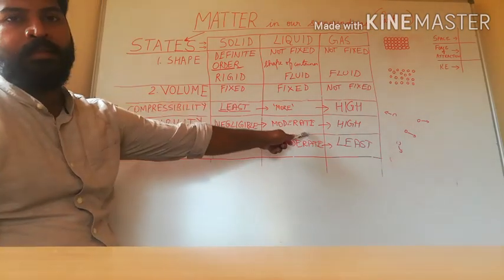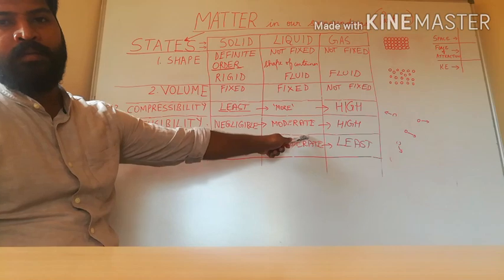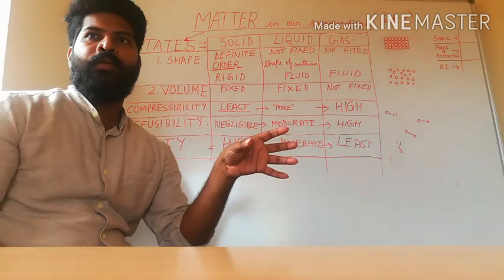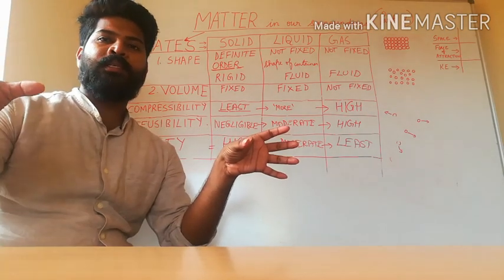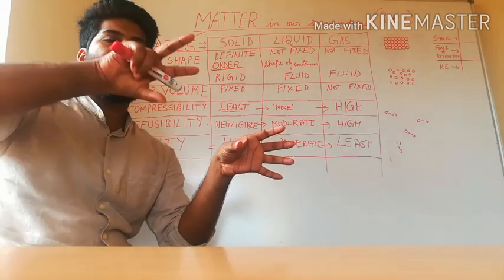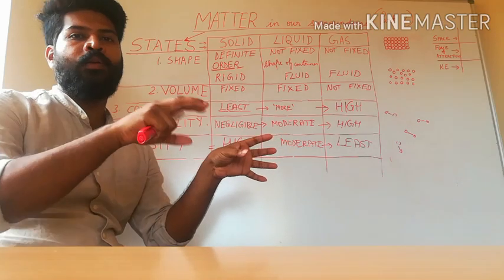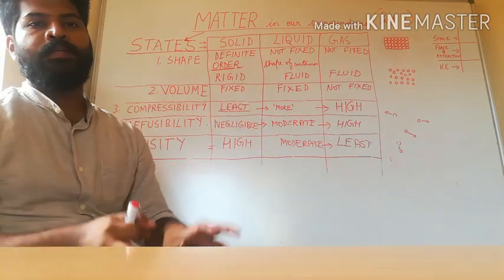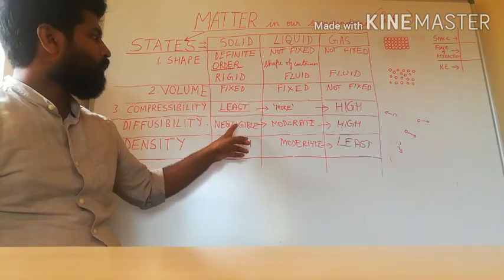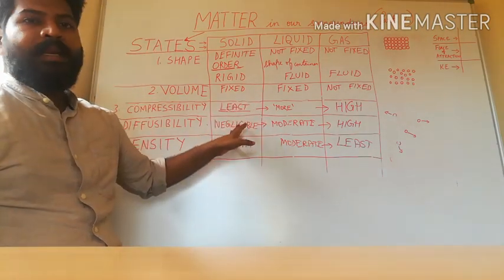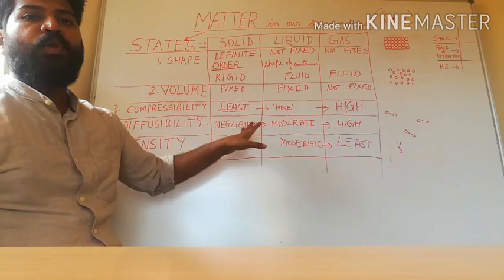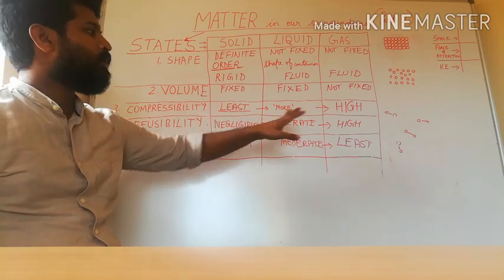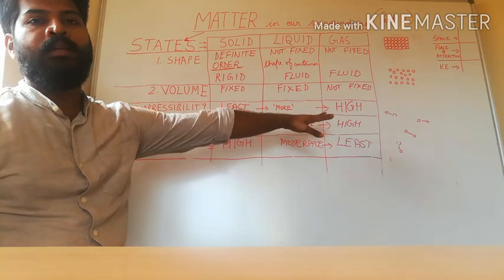Liquids have moderate diffusion — slightly more than solids but lesser than gases. For example, you can mix oil in water, or alcohol in water.